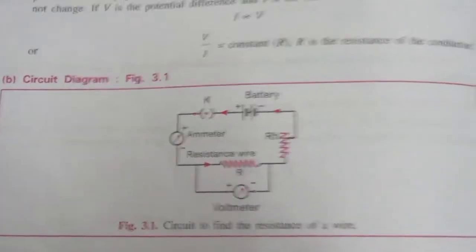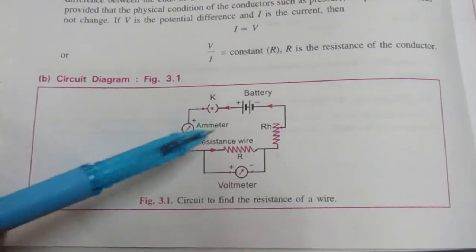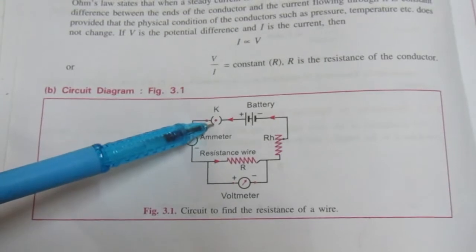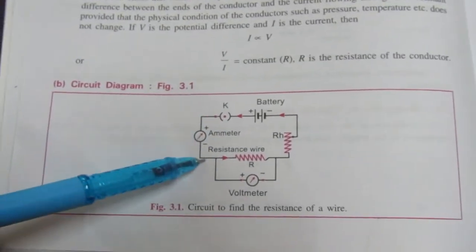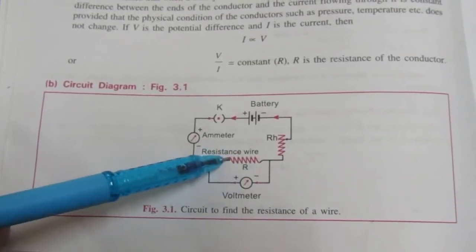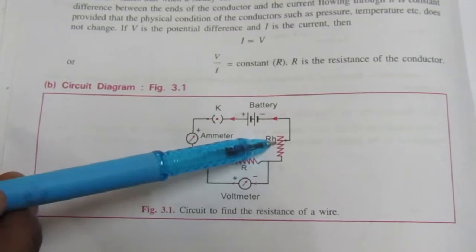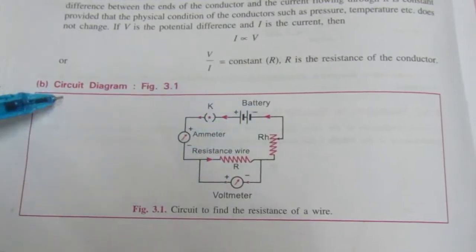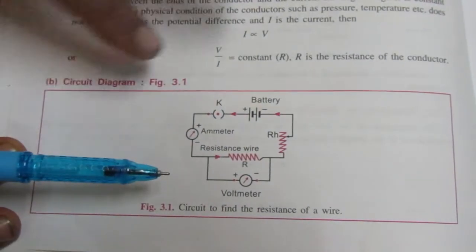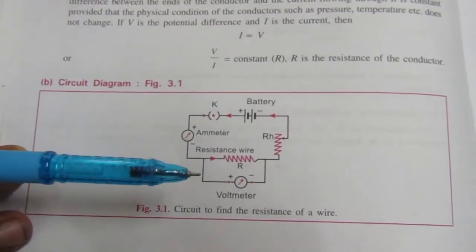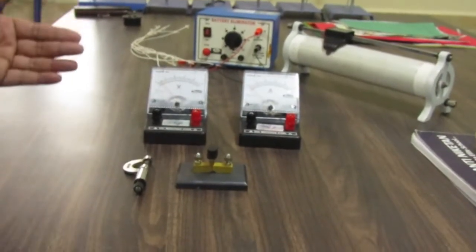This is the circuit diagram showing how we connect our circuit. From the positive end of the battery we connect the key, then the ammeter. The voltmeter is connected in parallel with the resistance wire. Then we connect to the rheostat and back to the battery. This is the circuit diagram for Ohm's law. Now we are going to connect all these instruments physically and measure the potential difference and current.